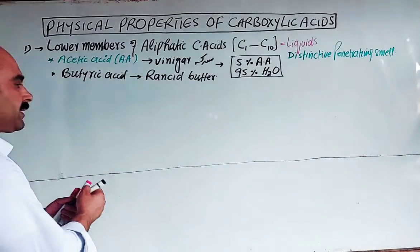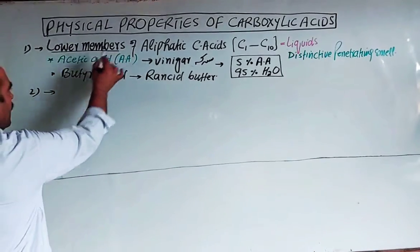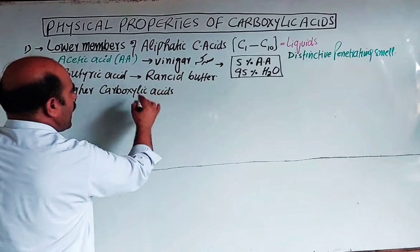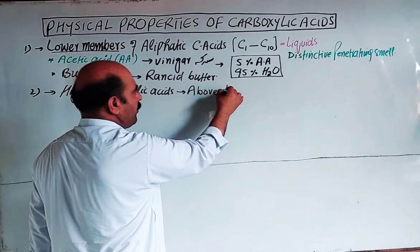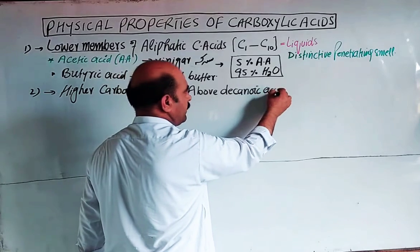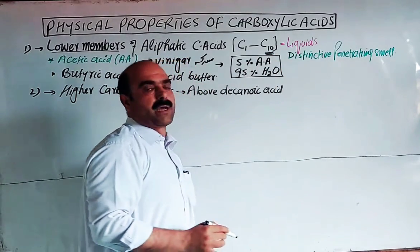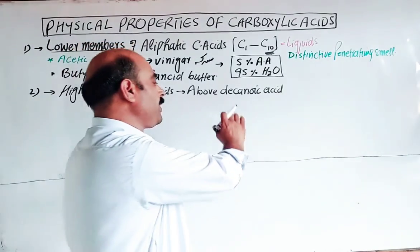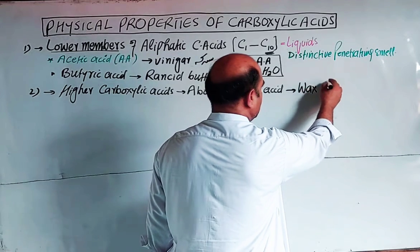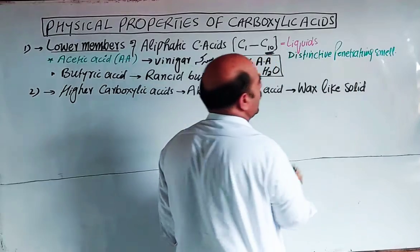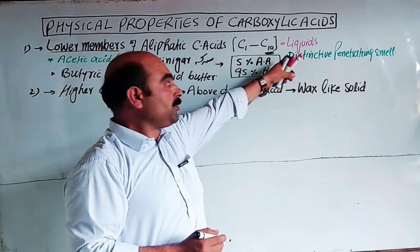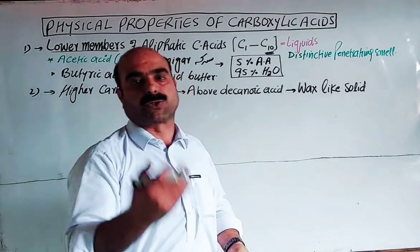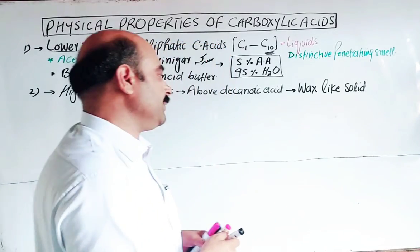Now the higher members of aliphatic carboxylic acids. Higher carboxylic acids means those above decanoic acid — that is, carbon 11, 12, 13, 14, and beyond. These are wax-like solids. Decanoic acid itself is in liquid state, but above decanoic acid, the compounds are wax-like soft solids.